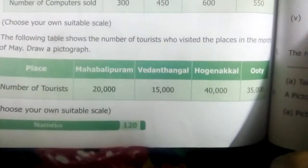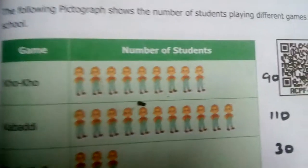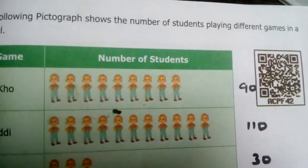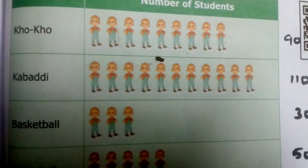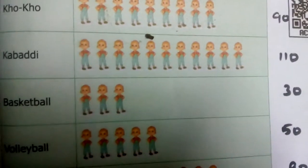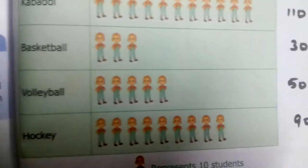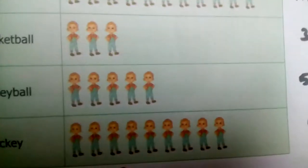Take this as homework. Now the fourth question: the following pictograph shows the number of students playing different games. The games given are Koko, Kabadi, Basketball, Volleyball and Hockey.